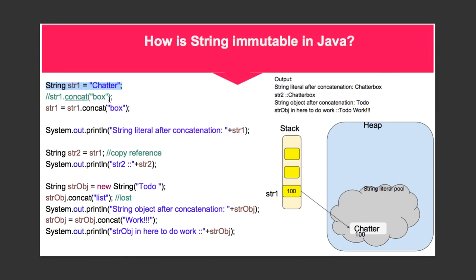Instead, the JVM creates a new string. So this is the string Chatterbox created at an address 301, but at the moment nothing refers to it because it is not assigned to anything, and if you just leave it like that it will be lost.